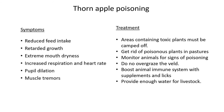Treatment for thorn apple poisoning: prevent animals from eating the plant by camping off areas containing it. Get rid of any poisonous plants in the pastures and monitor animals for signs of poisoning. Do not overgraze the veld. Boost the animal's immune system with supplements and licks. Provide enough water for livestock because water will dilute the poison. That's the end of plant poisoning — the next lesson will be about salt poisoning.